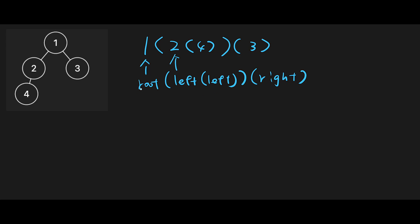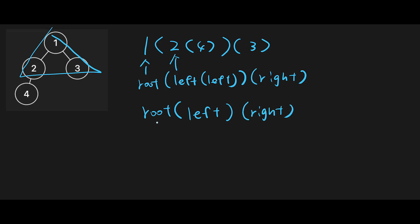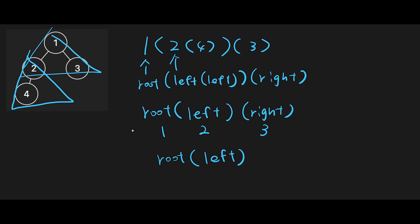Let me summarize. When we have a right child, we should create a string like root, left, and right. So root is one, left is two, and right is three. If we don't have a right child — for example, this subtree — we should create the output string with just root and left, no right. So root is two and left is four.